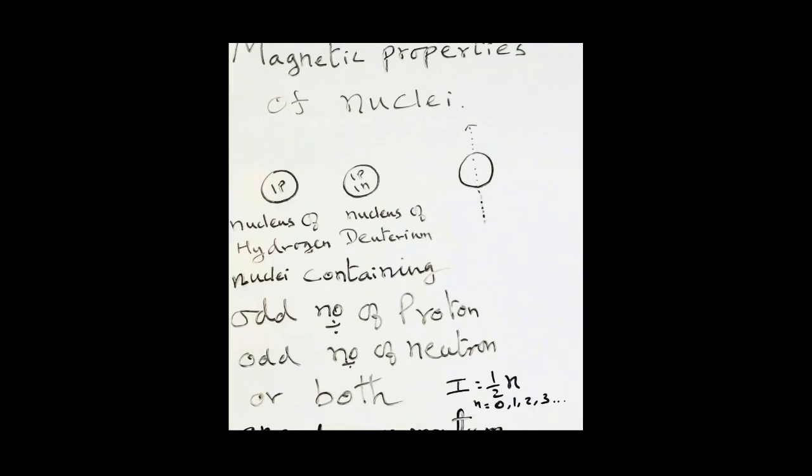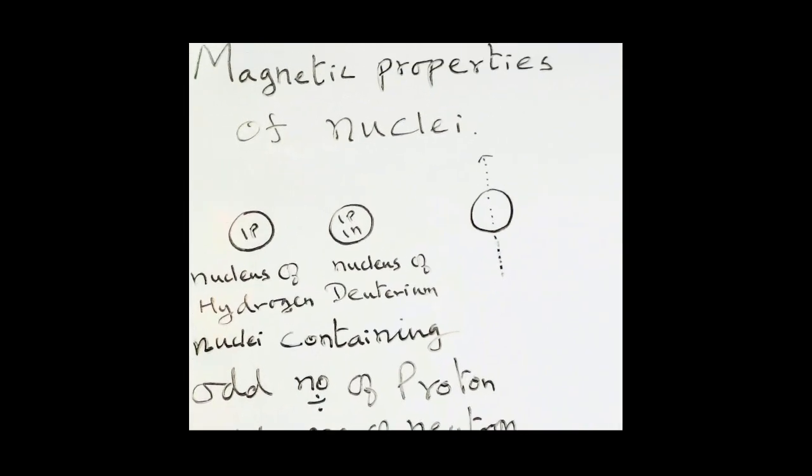Hello dear students of 2nd MSc Chemistry. From this class onwards we shall start our discussion on nuclear magnetic resonance spectroscopy. This spectroscopy gives you the spectrum of organic compounds which contain certain special nuclei. The spectrum contains various signals or peaks where the absorption of electromagnetic radiation is a function of the presence of certain nuclei. The NMR spectrum is a plot of frequency of absorption versus intensity of absorption.